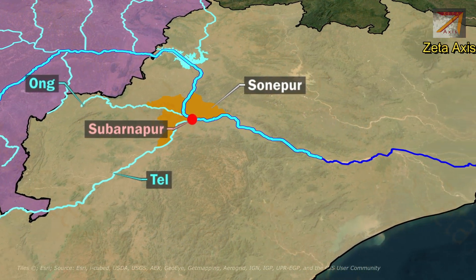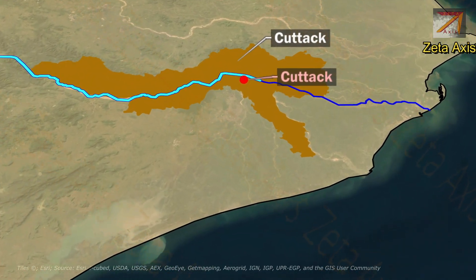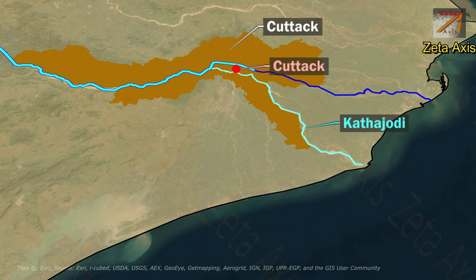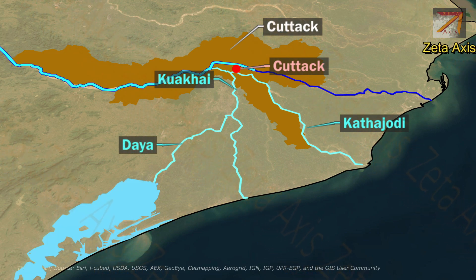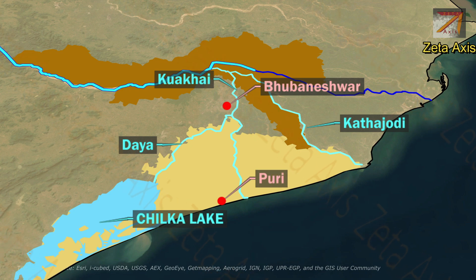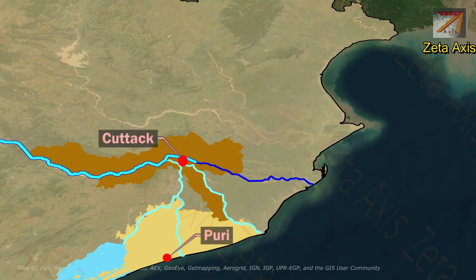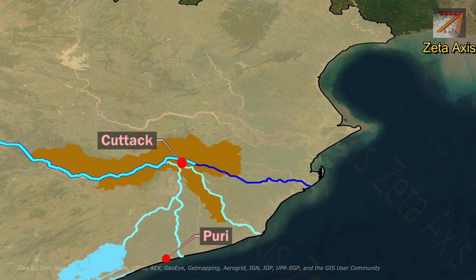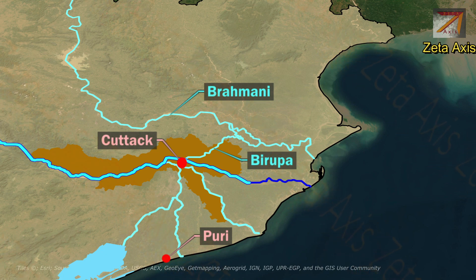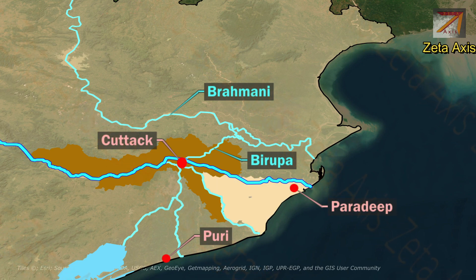The Mahanadi river then flows to reach Katak district, and just before Katak city, a huge distributory called Kathjodi river separates from Mahanadi. The Kathjodi river further divides into several substreams, one of which is Kuwakai river. Kuwakai river further divides, and one of its branches, Daya river, flows into Chilka lake. Bhubaneswar city is located on Kuwakai river, which flows into the Bay of Bengal near Puri city. Near Katak, Mahanadi also gives rise to several right-bank distributories, some of which flow into Brahmani river. Birupa is one important distributory of Mahanadi flowing into Brahmani river. The Mahanadi river enters the sea via several channels near Paradeep at Falls Point in Jagat Singhpur.